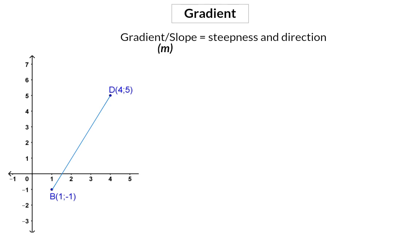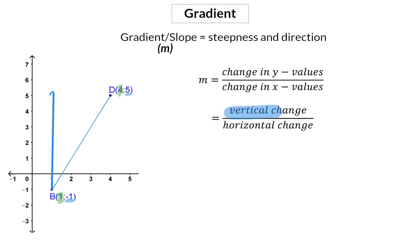To calculate the gradient we determine the ratio between the change in y values and the change in x values, which means we calculate the vertical change over the horizontal change.